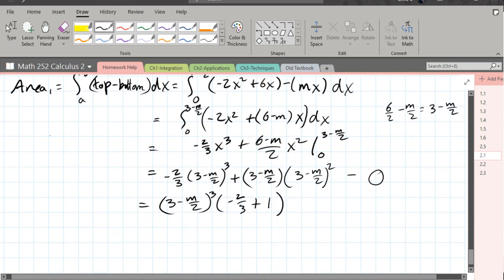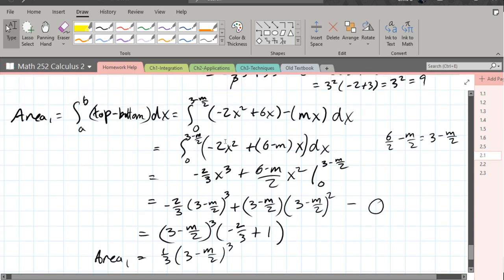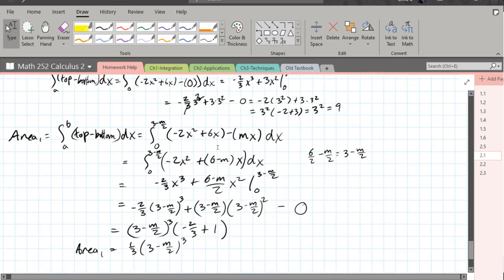So this is area 1. And last step, negative 2 thirds plus 1 is positive 1 third. 1 third times 3 minus m over 2 cubed. We have area 1. Easy peasy. Kidding. It's actually pretty tough.